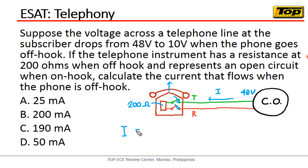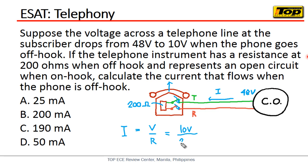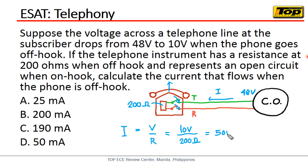What we are looking for is simply the current, and the current is simply voltage over resistance. When the telephone is off-hook, the voltage is 10 volts, and the resistance is 200 ohms.